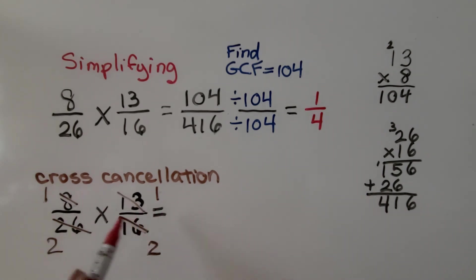Now we can just multiply straight across. 1 times 1 is 1. 2 times 2 is 4. We get 1 4th, the same as we did up here. The only difference is we multiplied the numerators and denominators and then tried to find the GCF. And here we used GCF within the problem and didn't need to simplify.